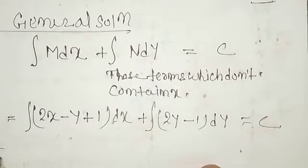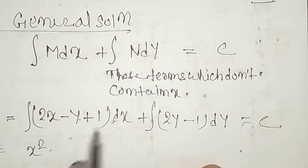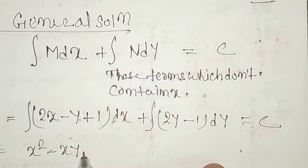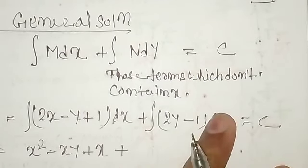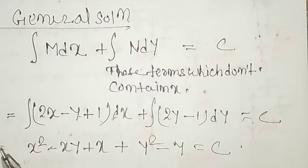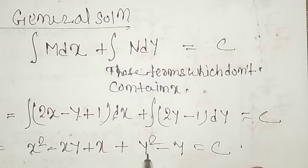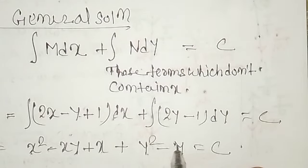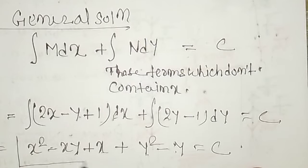Let's integrate. ∫(2x − y + 1) dx = x² − xy + x. Then ∫(2y − 1) dy = y² − y. So the general solution is: x² − xy + x + y² − y = c. Simplifying: x² + y² − xy + x − y = c. This is the required general solution.